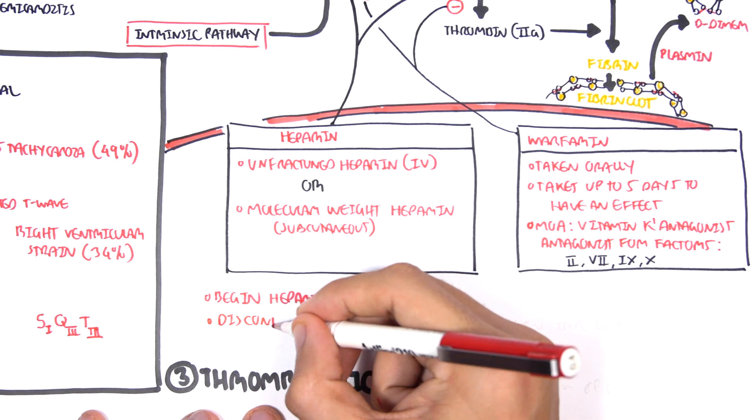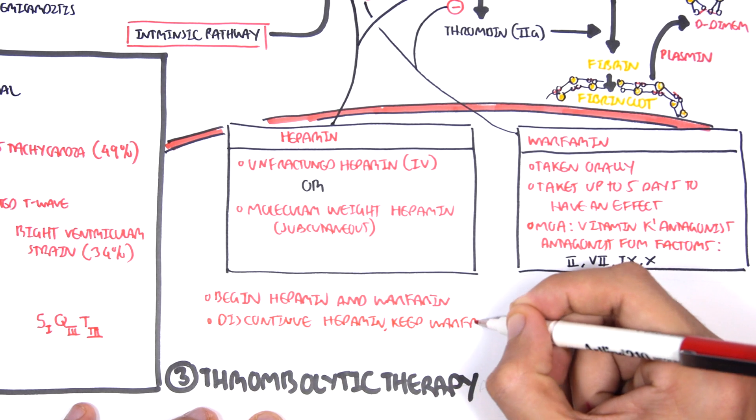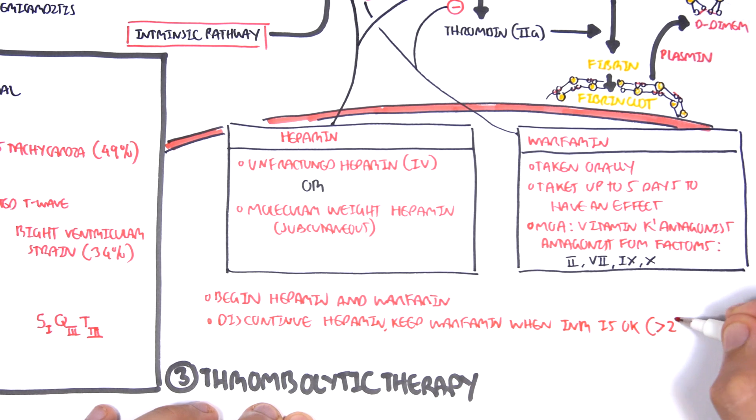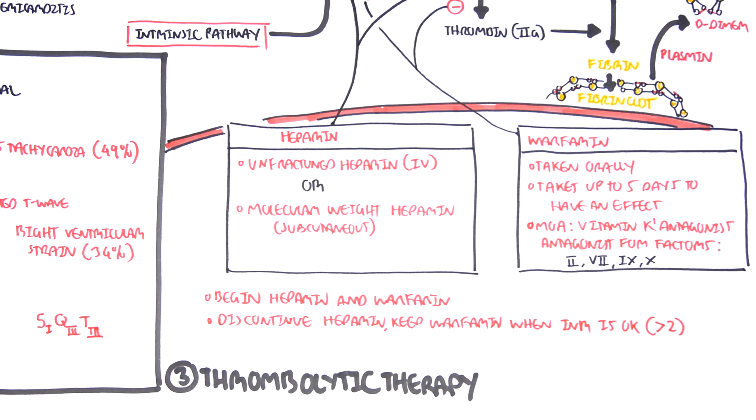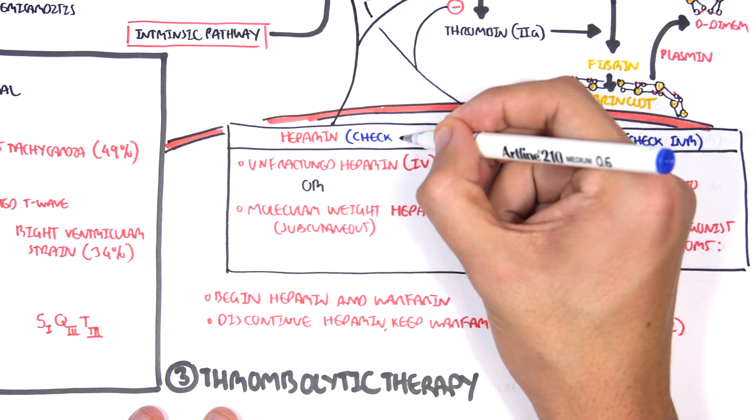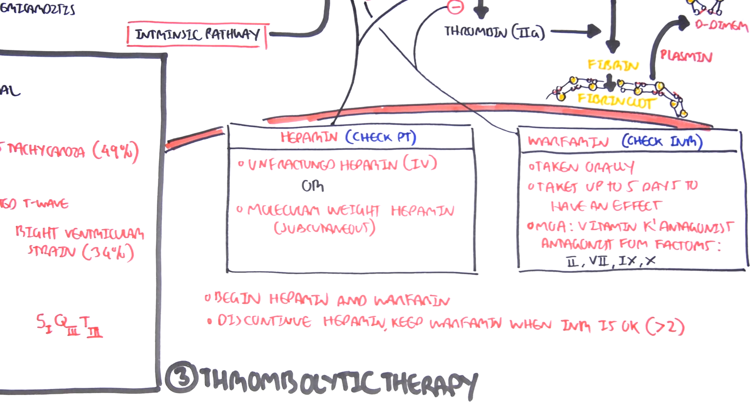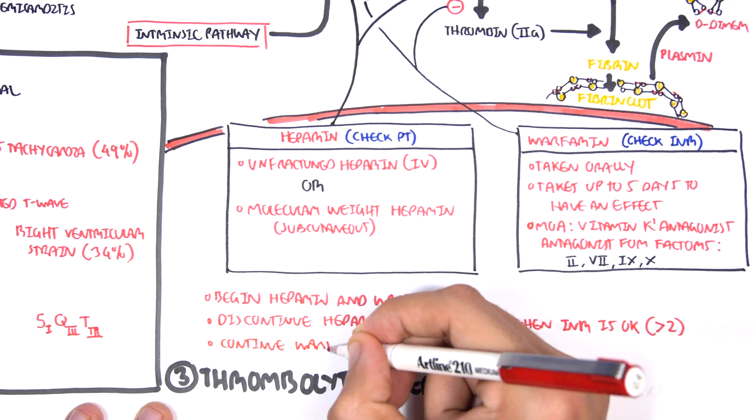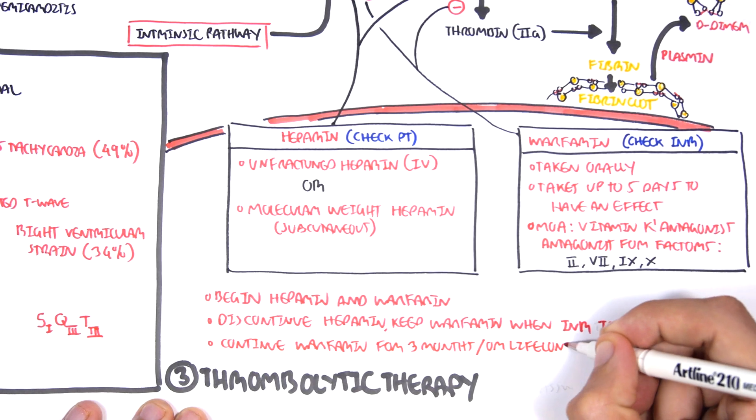We begin the pulmonary embolism patient with heparin and warfarin, but then we will discontinue heparin but keep the patient on warfarin as long as the INR is okay, as long as the INR is above 2 and below 3. Now the INR is another calculation for measuring coagulation activity in the body. To check the effects of warfarin, you check the INR. For heparin, you check APTT. When INR is above 2 and below 3, you can keep the person on warfarin and you have to monitor this person. And they continue warfarin for about 3 months, or lifelong, if they are at high risk of developing another thrombus.